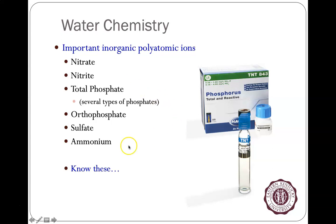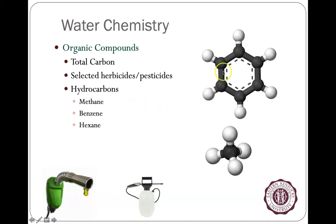Inorganic ions include nitrates, nitrite, total phosphate, sulfate, and ammonium. These don't have carbon and aren't big oily things. Nitrates and phosphates are important for making things grow — like fertilizers. Organic compounds often have large carbon ring structures. Many herbicides and pesticides are mixed into an oily solvent so they stick to plants, meaning when they enter water they're oily. Gasoline and products used to make it are hydrocarbons.